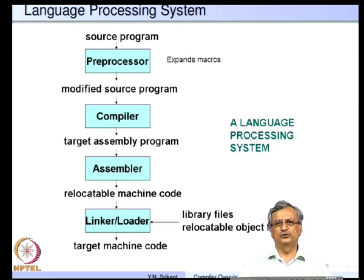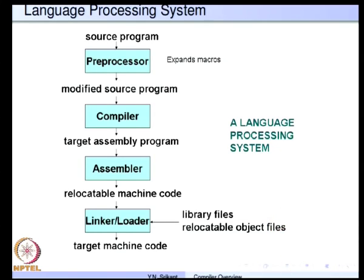That covers the motivation to study compiler design. Let us begin with the block diagram of a general language processing system. We have a preprocessor which takes a source program as input and outputs a modified source program. Even in a C compiler we have such preprocessors — for example, hash-define macros or hash-include directives are expanded by the preprocessor, which provides the expanded source program as input to the compiler.